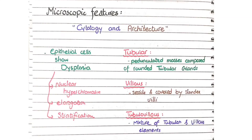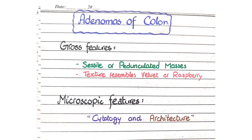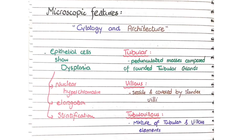For the microscopic features, we discuss two headings: the cytology and the architecture of colonic adenomas. Cytologically, the characteristic feature of colonic adenomas is dysplasia in the epithelial cells — epithelial cells show dysplasia. This is a very important characteristic feature to remember.